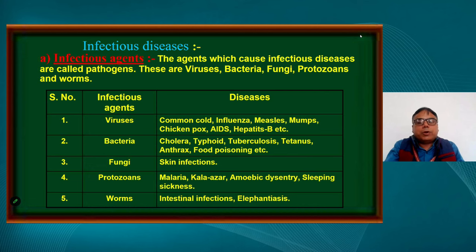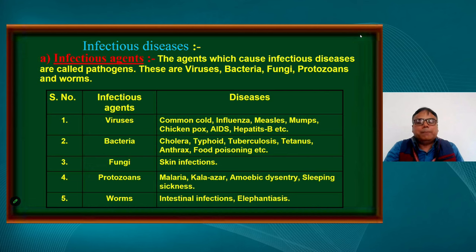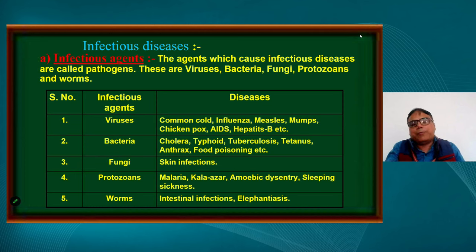What diseases are caused by viruses? Viruses cause the common cold, influenza, measles, chicken pox, hepatitis A, B, C, D, and E — commonly known as jaundice — and acquired immunodeficiency syndrome, AIDS. There is another group of diseases caused by bacteria: cholera, typhoid, tuberculosis, tetanus, anthrax, food poisoning, and plague.